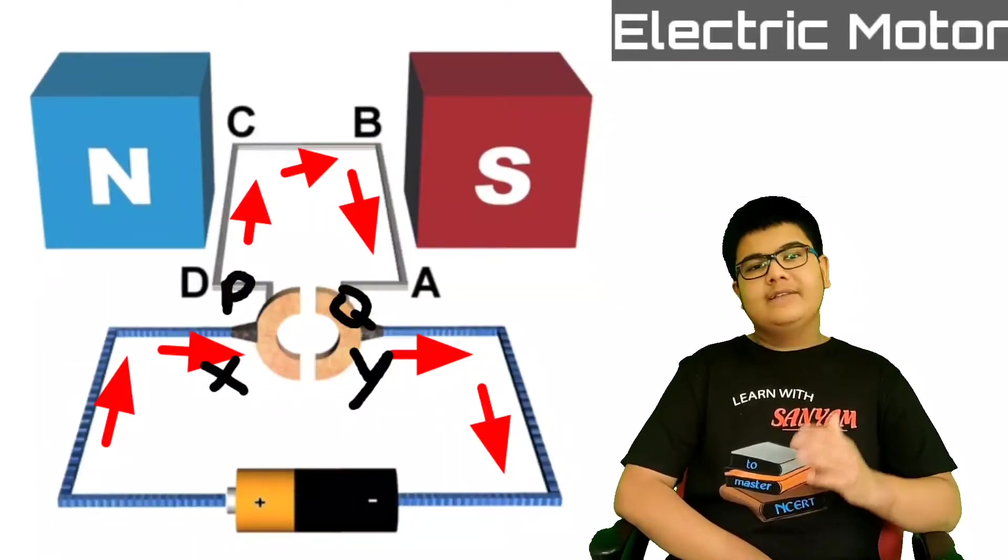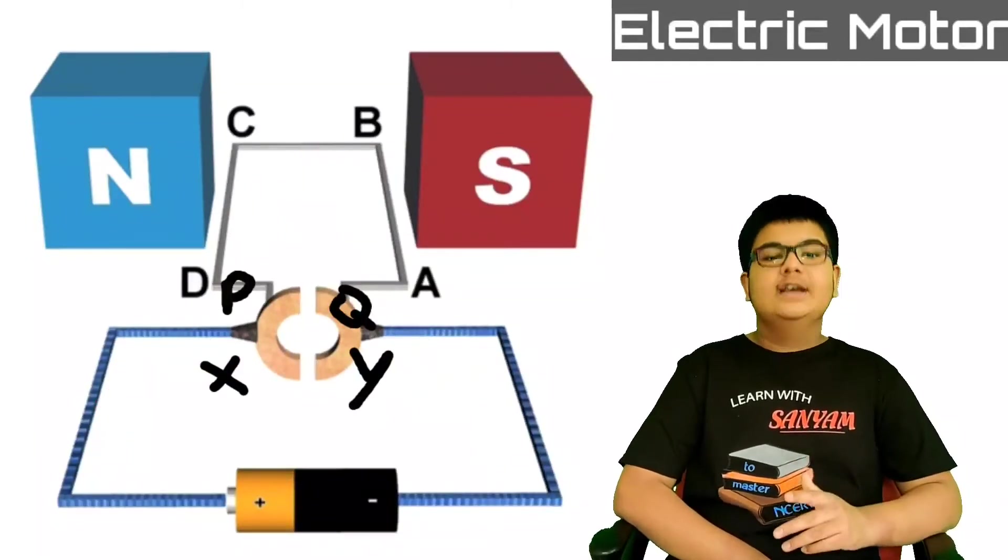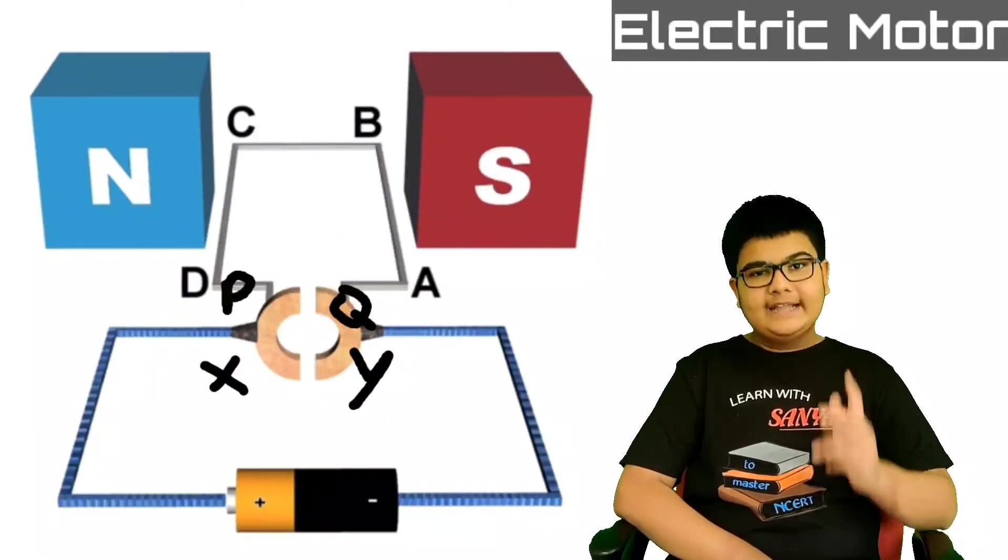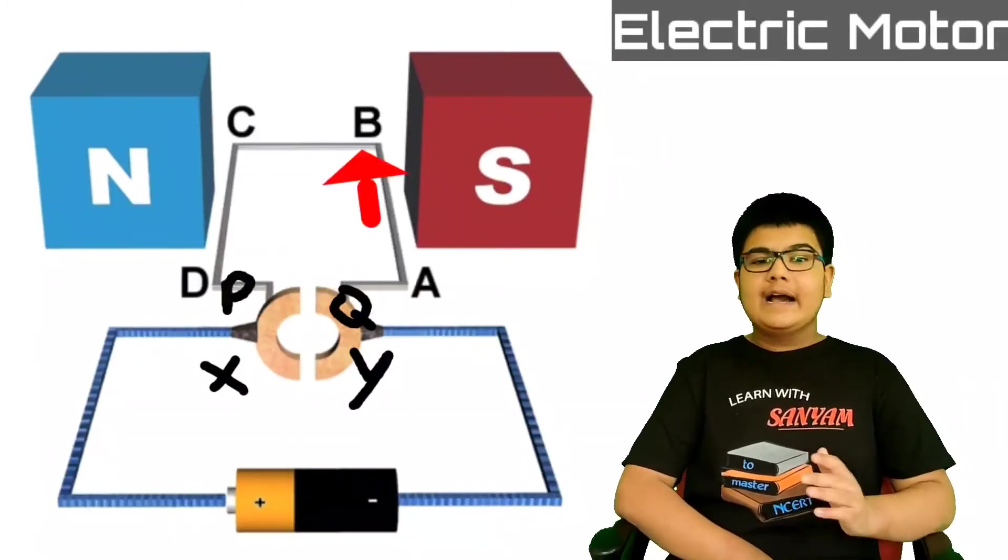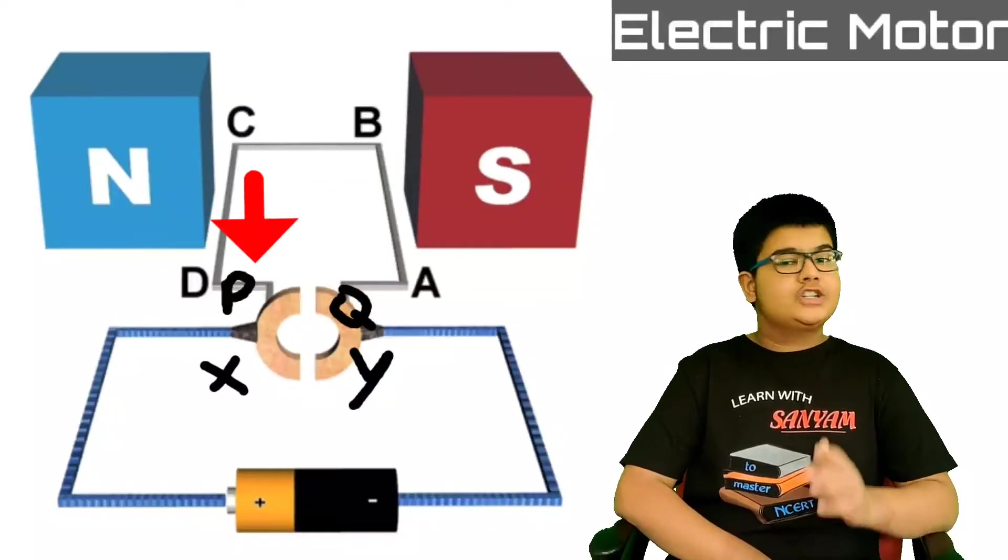Due to the reversal of current, the direction of force also reverses. Now if you will try to apply the Fleming's rule, you will get that AB arm is now being pushed upwards and CD arm is now being pushed downwards.